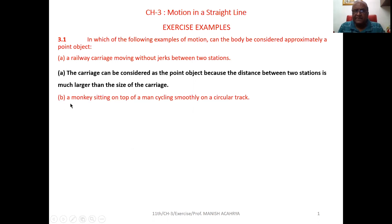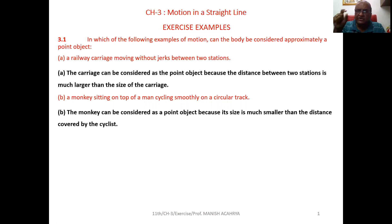B. A monkey sitting on top of a man cycling smoothly on a circular track. Now, the circular track followed by the cyclist, no doubt, when using cycle, the circular track is covered means we can understand the track will be large one. Here the circumference of the track is large compared to the size of the monkey. So here we can consider monkey as a point object.